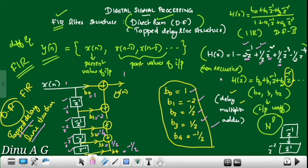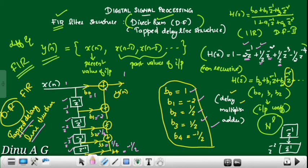This is worth a minimum of 5 marks. FIR filter implementation in direct form, otherwise called the Tapped Delay Line structure. The method: first identify that it is an FIR filter from the system function or difference equation, then extract the coefficients, then draw and implement the structure.